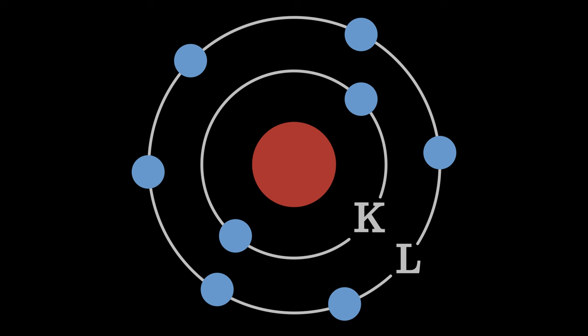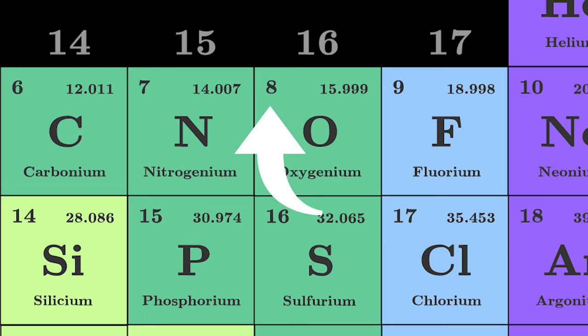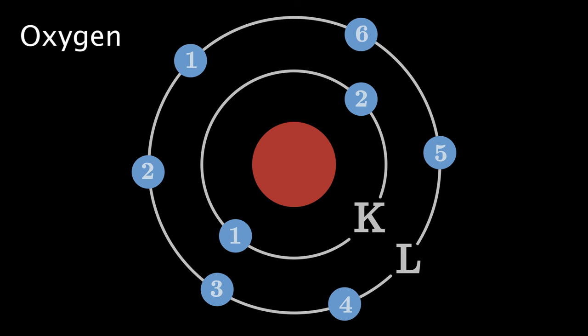For example, it can be used to understand the electron distribution of an oxygen atom. We can see from the periodic table that an oxygen atom has eight electrons. But how are they distributed in the atom? The shell model answers this question.